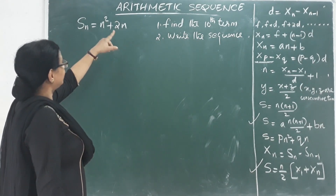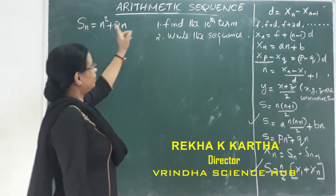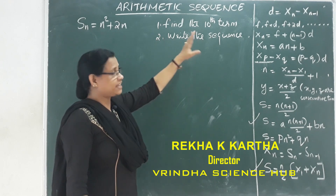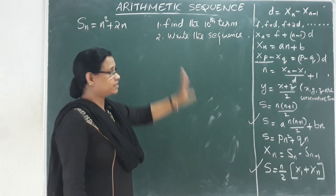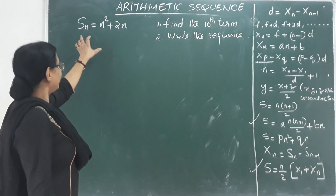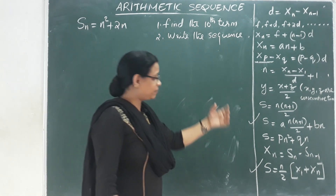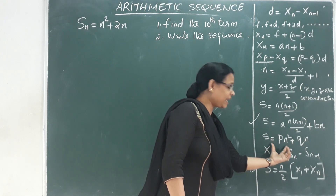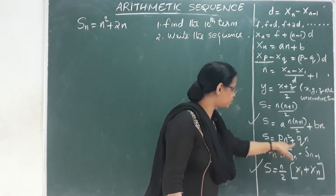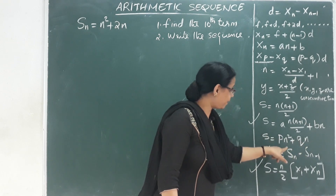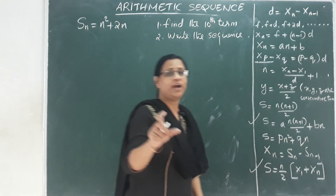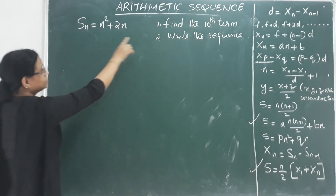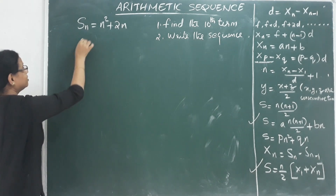Given that Sn equals n squared plus 2n, find the 10th term and write the sequence. We will find the 10th term and the sequence. We will find an expression for the AP where the sum of n terms is in the format pn squared plus qn.